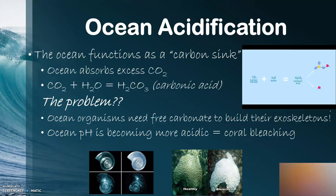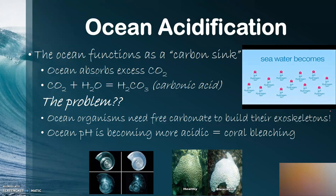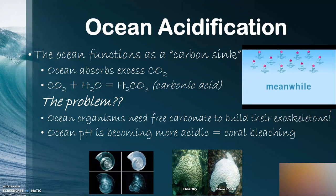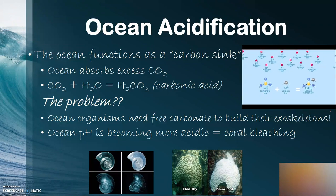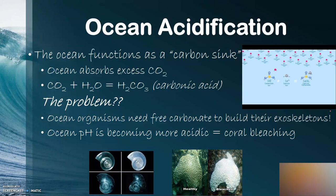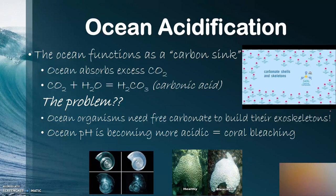This acid immediately separates into bicarbonate ions and hydrogen ions. As the concentration of hydrogen ions increases, seawater becomes more acidic. Many marine organisms depend on carbonate ions to build calcium carbonate for their shells and skeletons. As acidity increases, some extra hydrogen ions react with carbonate ions, forming more bicarbonate and making it harder for organisms to grow. When ocean acidity increases too much, carbonate shells and skeletons can even start to dissolve, as hydrogen ions react with solid calcium carbonate, converting it to soluble bicarbonate and calcium ions.